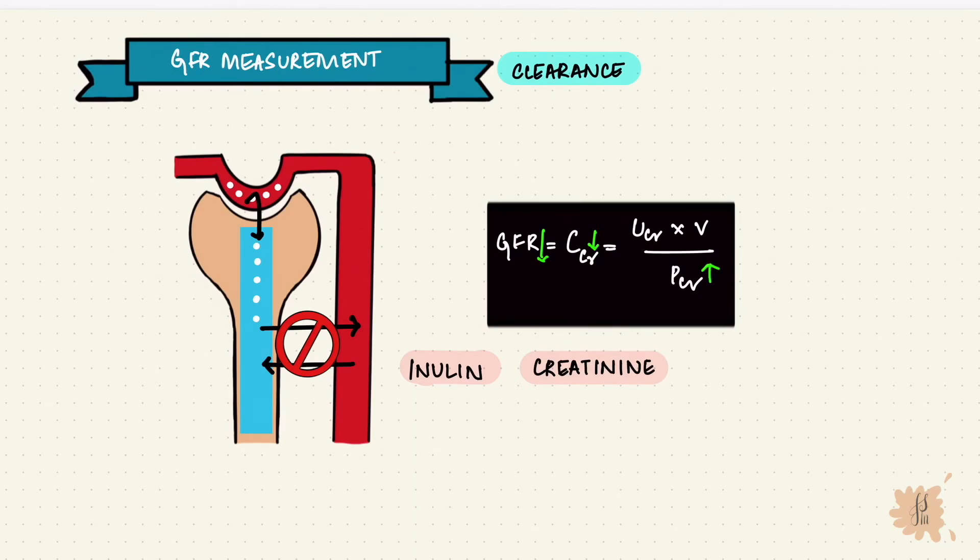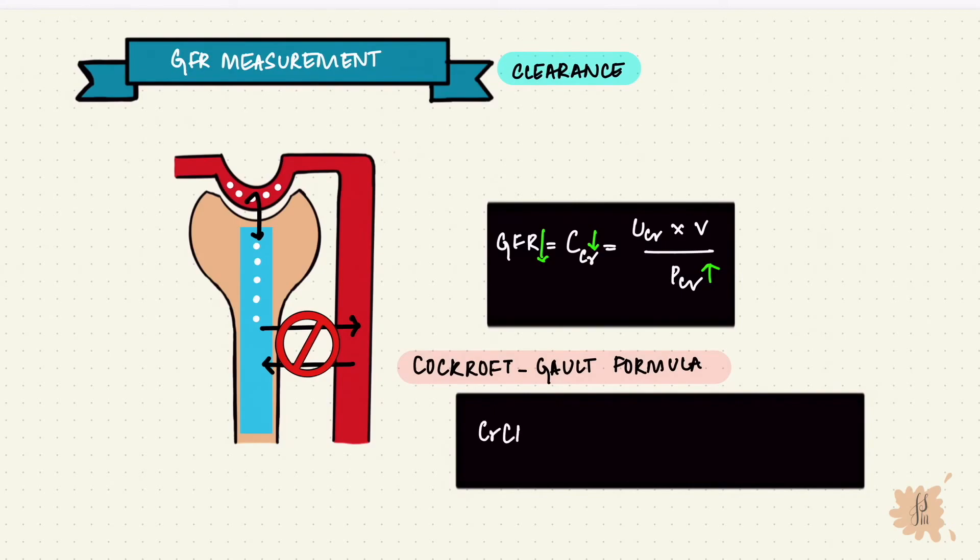The GFR can be measured from the serum creatinine by the Cockcroft-Gault formula. That's 140 minus the age times weight in kilograms over the serum creatinine times 72. That's for males. This whole thing multiplied by 0.85 is for females.